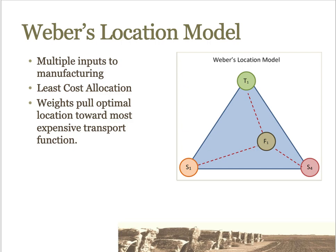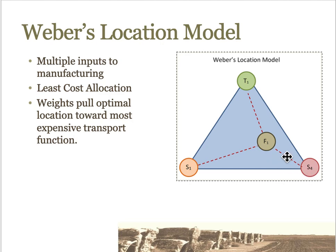Alfred Weber's least cost location model provides site location analysis with a basic tool to evaluate several weighted input considerations. In the most basic version of the model, only transportation costs are considered. Therefore, the best place for a factory is closest to the input or output with the highest transport cost. In the illustrated example, the factory labeled F1 is located nearest to supplier S4, because transport costs are highest from that location.